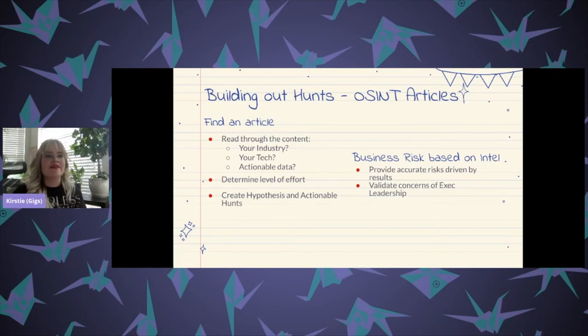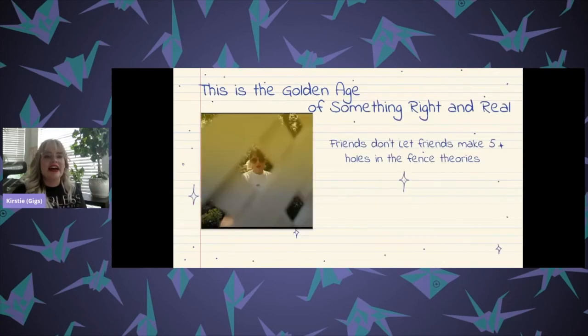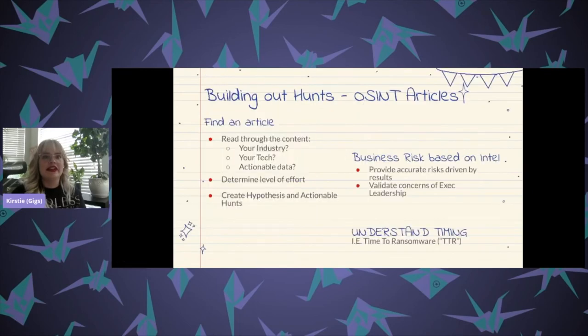One other big topic that seems very timely to discuss is understanding the timing of campaigns. For example, detection can play a really big role, but acting on those detections is really where the money is. Initial point of compromise to completion of the mission for ransomware has been as quick as a couple of hours. So that doesn't leave a lot of room if you're unprepared, right?